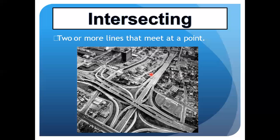So to summarize: intersecting lines are two or more lines that meet up at a point.